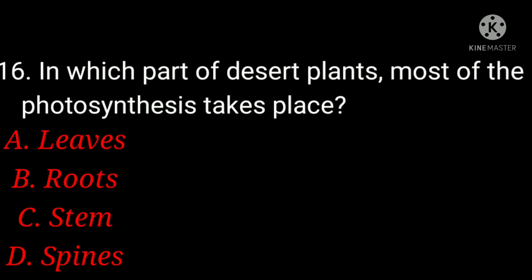In which part of desert plants does most of the photosynthesis take place? A. Leaves, B. roots, C. stem, D. spines. And the answer is option C, stem.